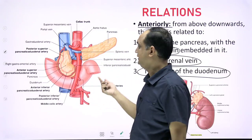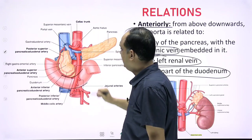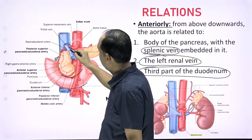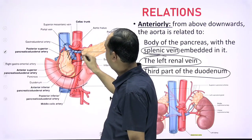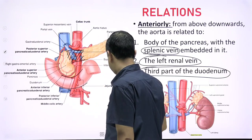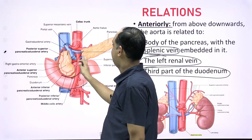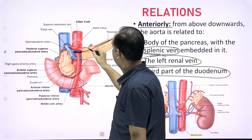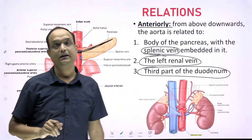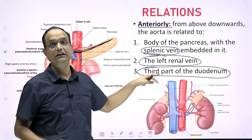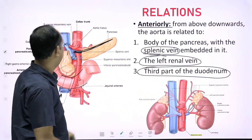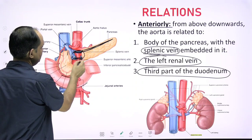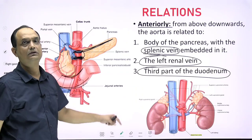In this image, you can appreciate that the third part of the duodenum — the horizontal part — crosses the abdominal aorta from right to left. Behind the pancreas, the splenic vein runs along the upper border on the posterior side of the pancreas. So from above downward, the anterior relations are: body of pancreas with splenic vein, then the left renal vein, then the horizontal third part of the duodenum.